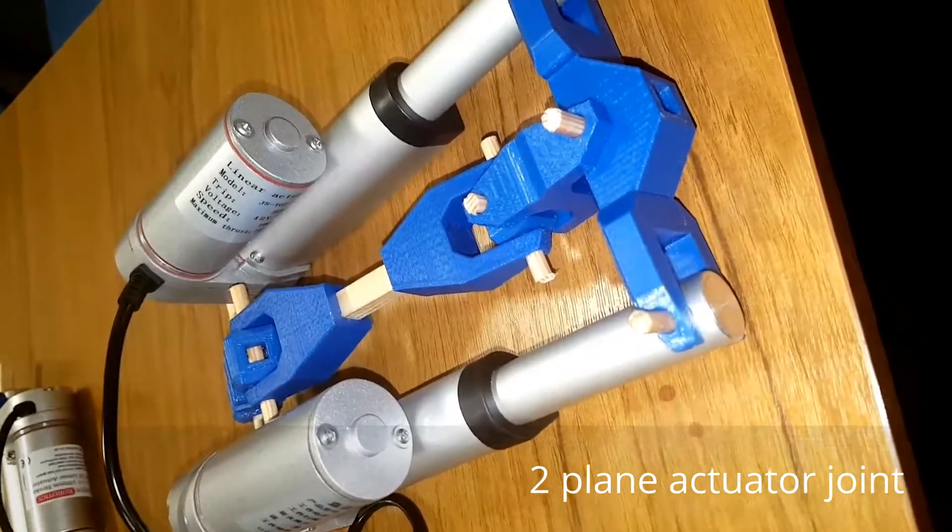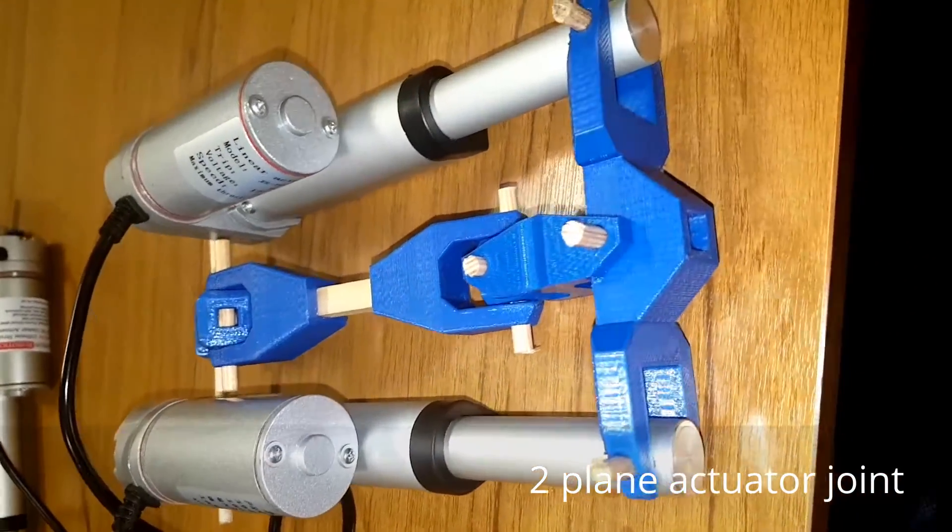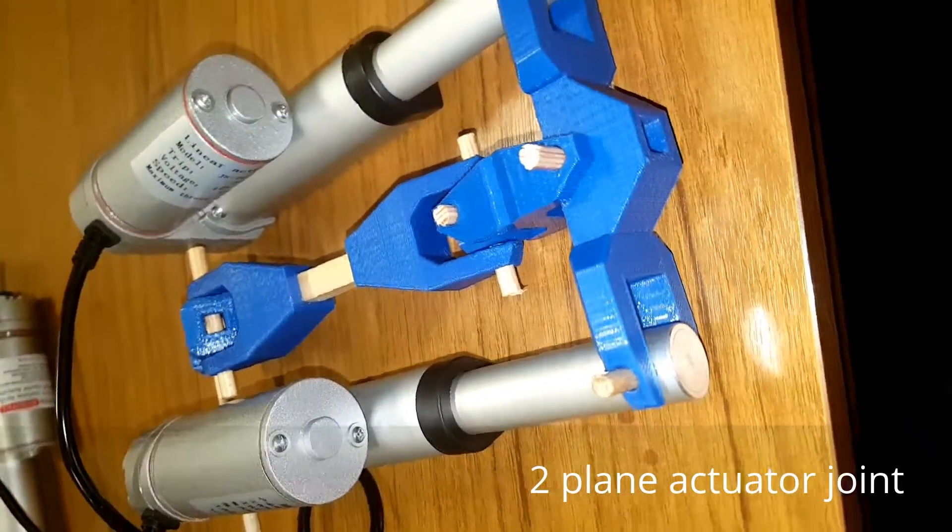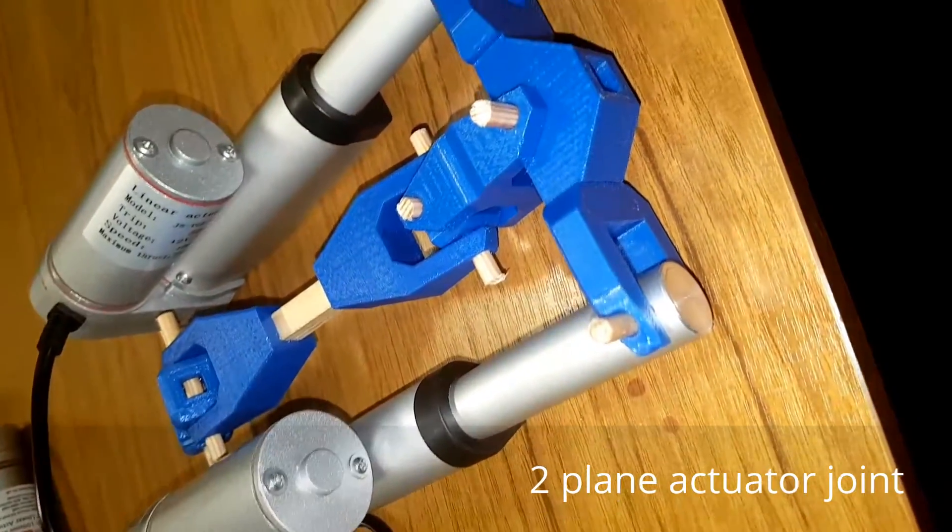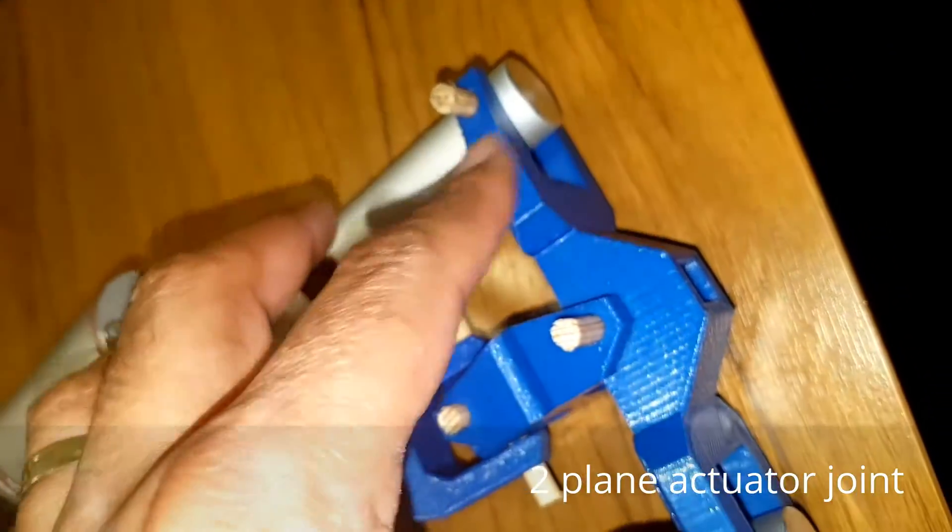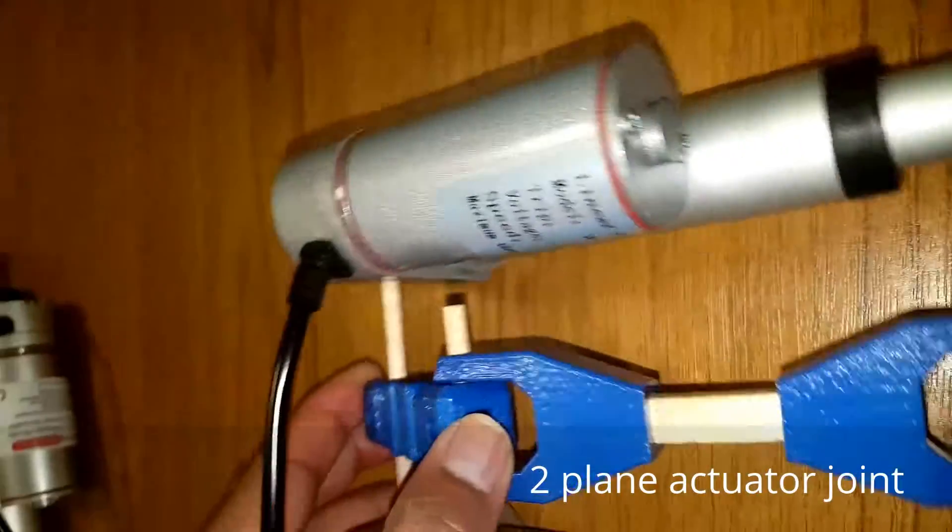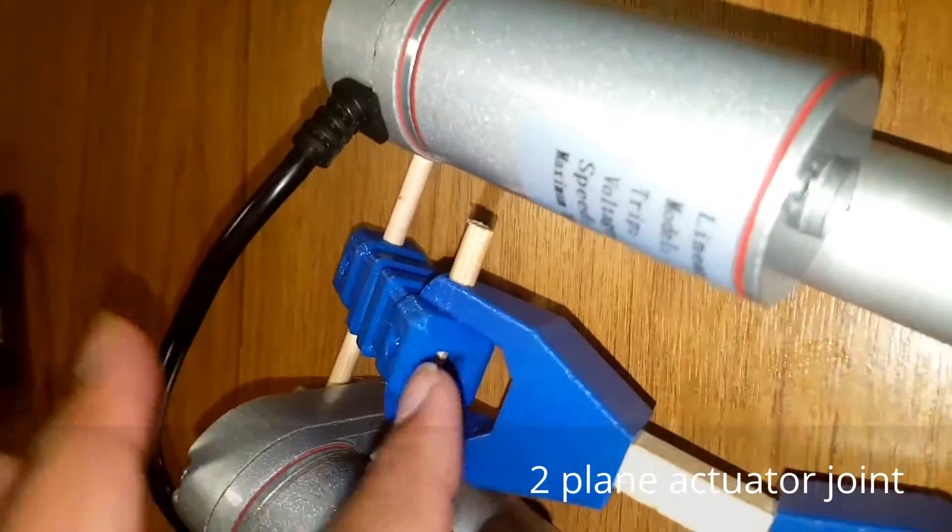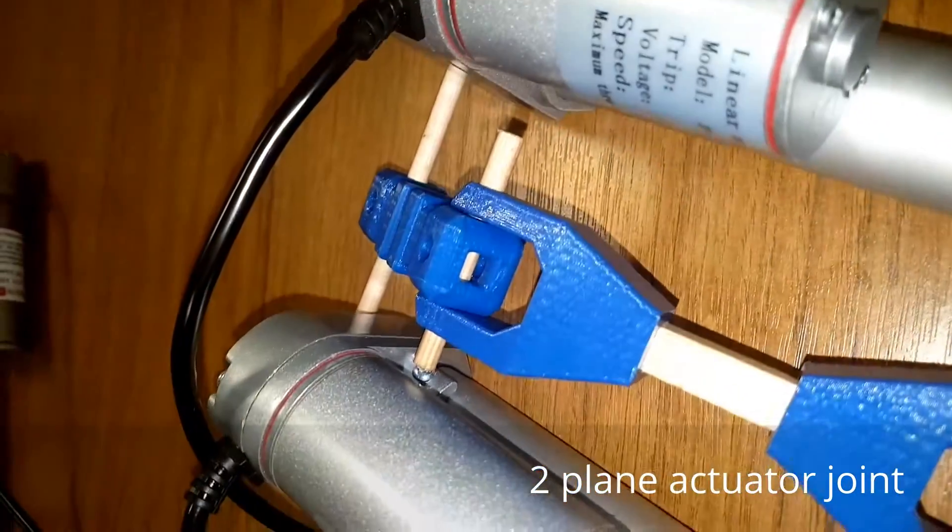So this is the new unit which I've put together. As you can see, it's got a universal joint here. It's got a pivot joint here. And it has the normal kind of lever mechanism which we used with the first linear actuator here.